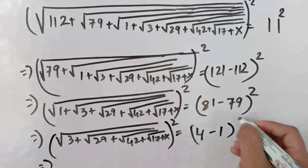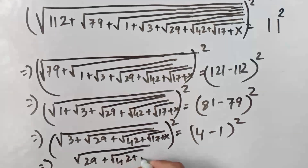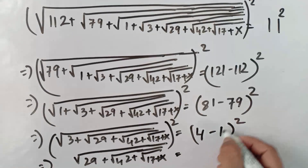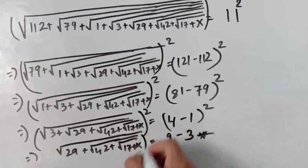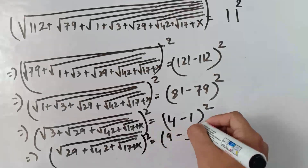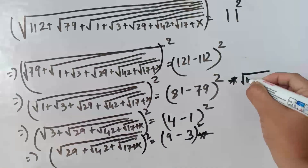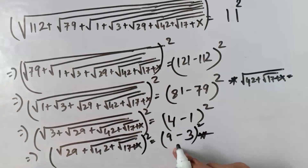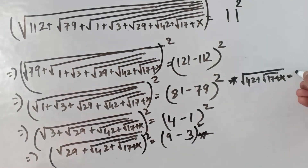Again we square both sides. Square root of 29 plus square root of 42 plus square root of 17 plus x equals to 3 squared, that means it is 9 minus 3. It comes: square root of 42 plus square root of 17 plus x equals to 6. Then 6 squared equals to 36, and 36 minus 29 means it comes 7.